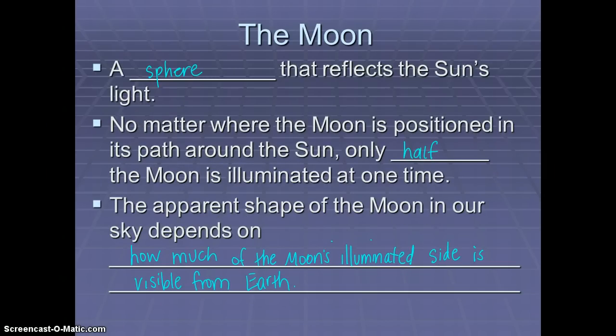We talked about the Moon today in class and mentioned that it is a sphere that reflects the Sun's light. No matter where the Moon is positioned in its path around the Sun, only half of the Moon is illuminated at one time. The apparent shape of the Moon in our sky depends on how much of the Moon's illuminated side is visible from Earth. It all depends on our perspective.